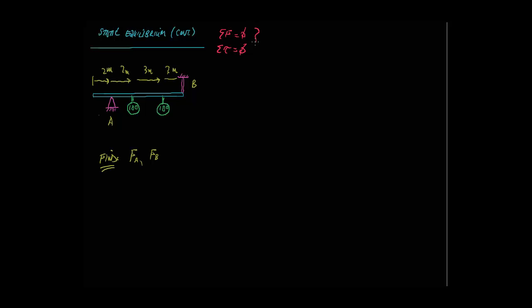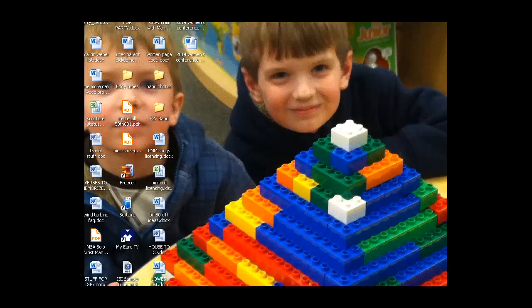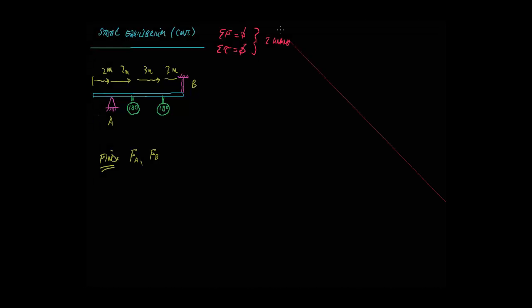And sometimes for a static equilibrium problem we have to use both of them because we end up having two unknowns. If we have two unknowns, that means we need two equations to be able to solve. And that gives us our one equation and our two equations.